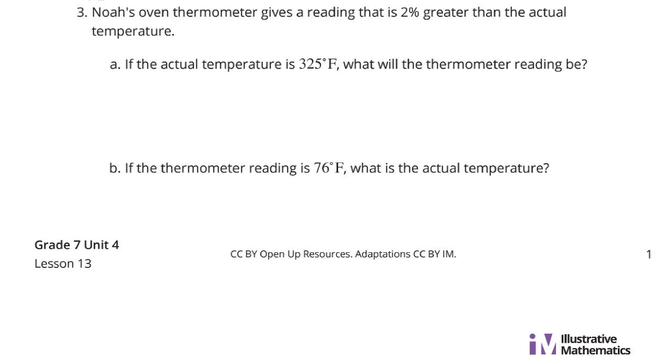Well, once again, two ways to solve this. You could take 325 and multiply it by that 2% to figure out how much greater is this reading. When you do that, you get 6.5 degrees. And so you could add 325 to that 6.5 degrees warmer than it is and get 331.5 degrees Fahrenheit.